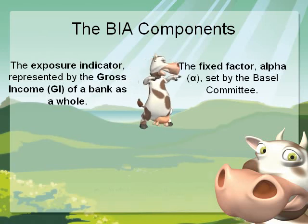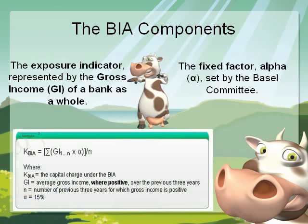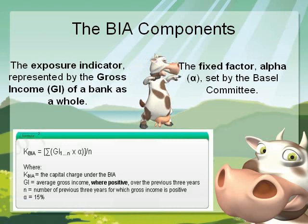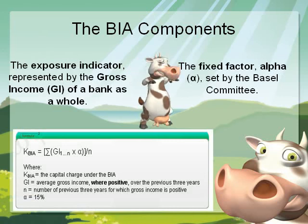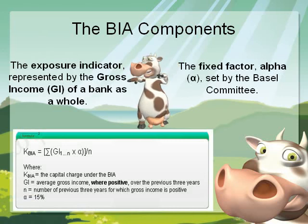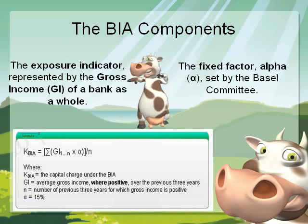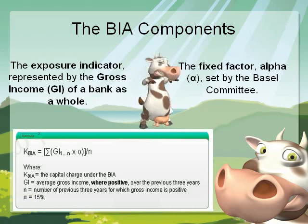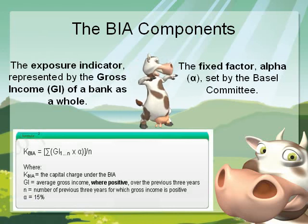The formula for calculating the capital charge for operational risk under the basic indicator approach is as follows. At this stage, don't bother yourself with the complexity of this equation — you will see later on how simple and easy we are going to use this calculation.